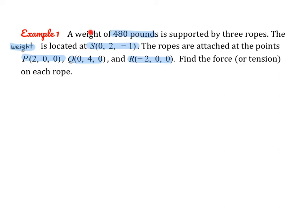Here we have a weight that weighs 480 pounds and it's supported by three ropes. The weight is located at point S and the ropes are attached at three anchor points P, Q, and R. Imagine a weight floating in the middle of the room connected to three ropes anchored at different points on the ceiling.